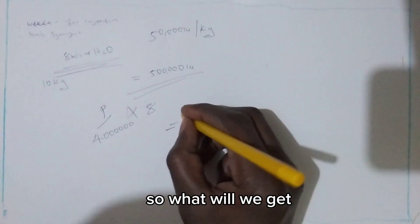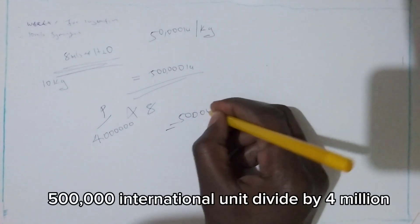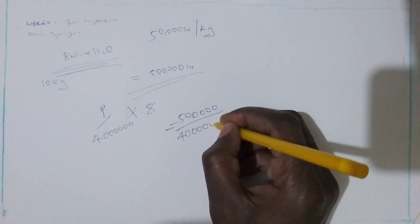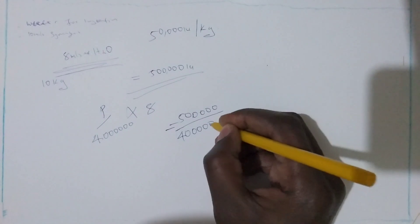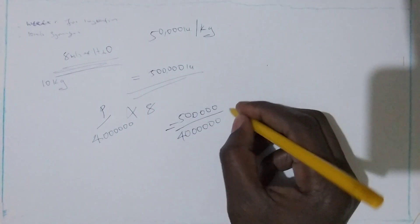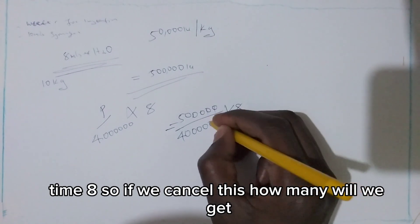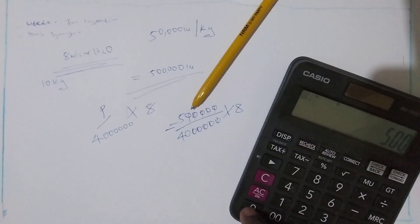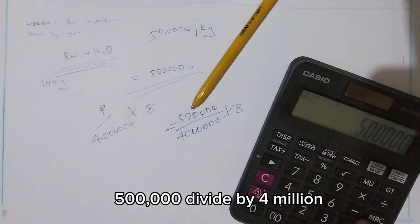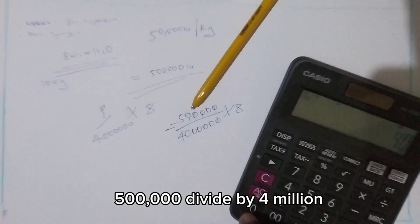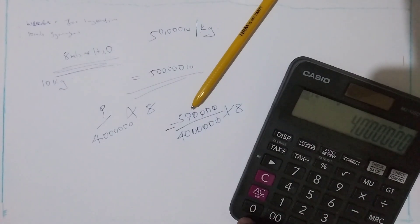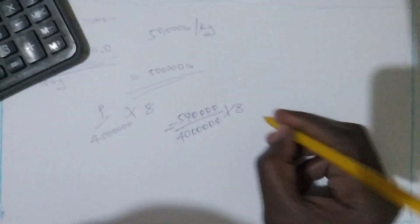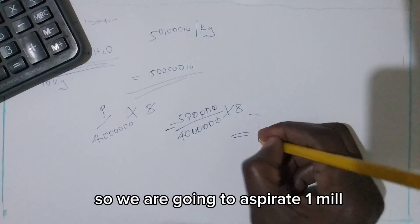So what will we get? 500,000 international units divided by 4 million times 8. We will get 1 mL. So we are going to aspirate 1 mL.